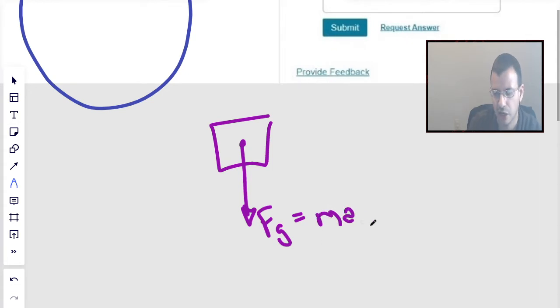Newton's second law: Force equals mass times acceleration. Put a little c here so we know that it's centripetal acceleration. You don't need the c, I mostly just enjoy it.